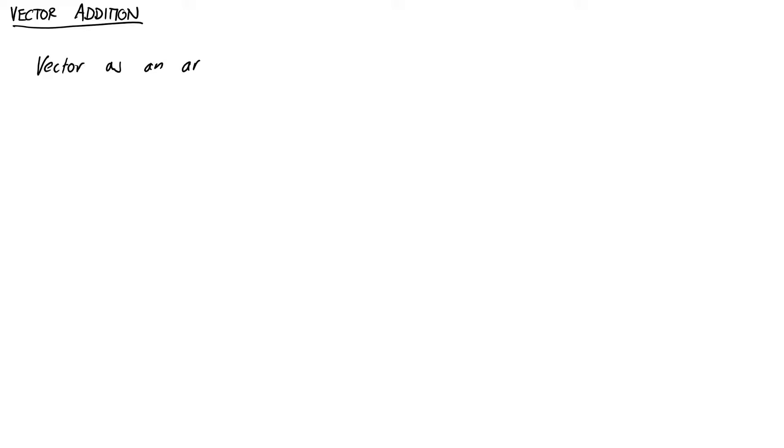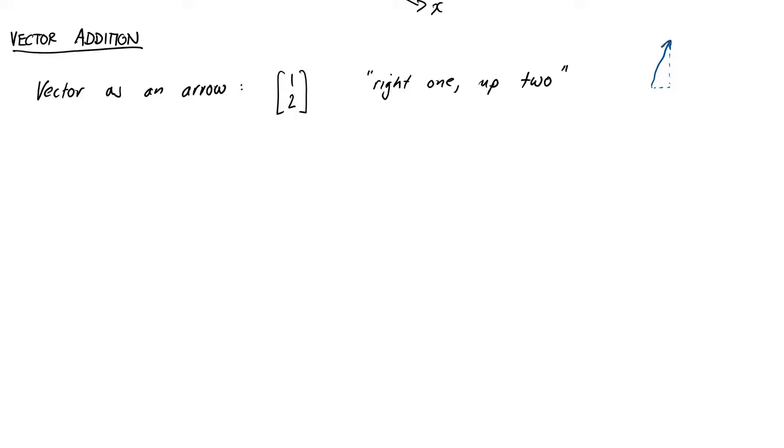The most useful model of a vector to help us understand addition is the one where we think of a vector as an arrow. E.g. the vector 1, 2 can be interpreted as an arrow that goes right 1 and up 2. Similarly, the vector negative 3, 2 can be interpreted as go left 3 and up 2.